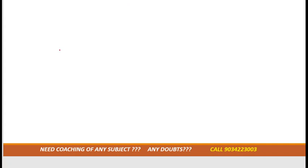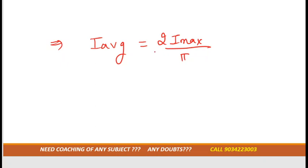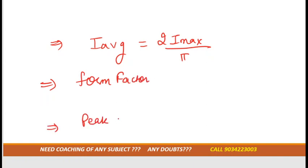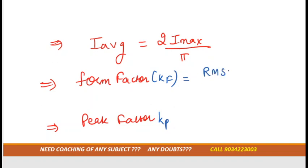Next is the average value. The formula for average value is: I_average = 2·I_max / π. You need to remember this formula. There are also two more quantities: form factor, denoted K_F, and peak factor, denoted K_P.